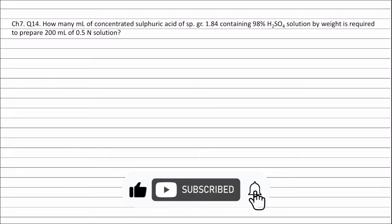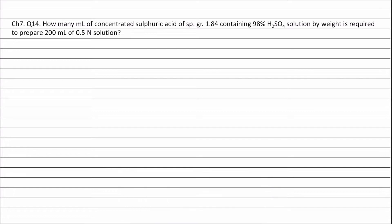Question 14. How many milliliters of concentrated sulfuric acid of specific gravity 1.84 containing 98% sulfuric acid solution by weight is required to prepare 200 milliliters of 0.5 N solution?